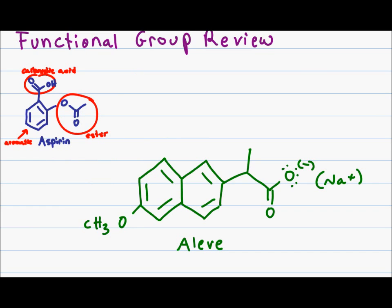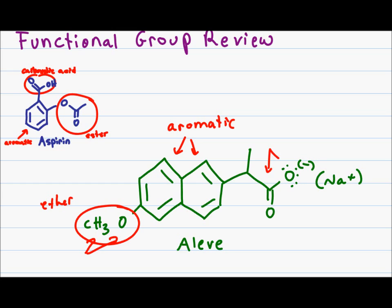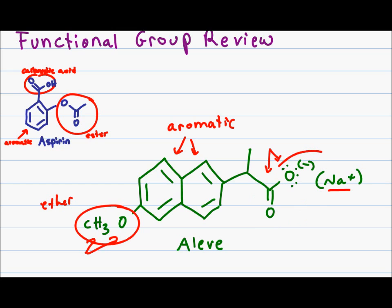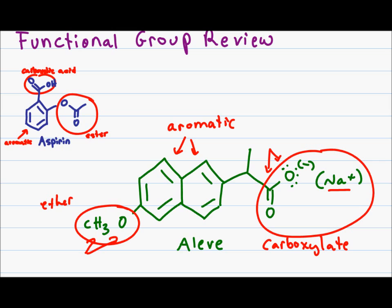For our final problem, let's identify all functional groups in Elite. Starting from the left, I see an R group attached to an oxygen attached to another R group — this has to be an ether. I have two benzene-like looking rings, so these have to be aromatic. On the right, I have a carbonyl near an oxygen, which looks like a carboxylic acid, except instead of a hydrogen, we have a negative charge with a positive counter ion. This is the salt version of the carboxylic acid, called a carboxylate. For additional practice, you might want to look online and find different medicines or other molecules you're familiar with and try to identify all the functional groups that show up.